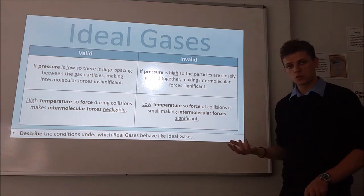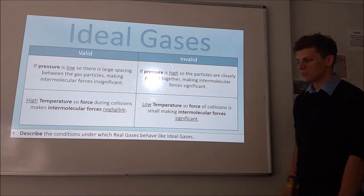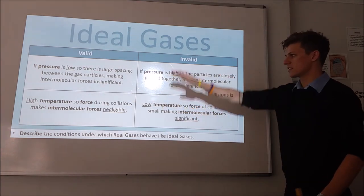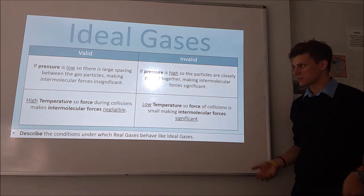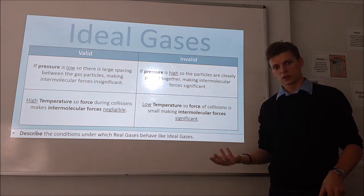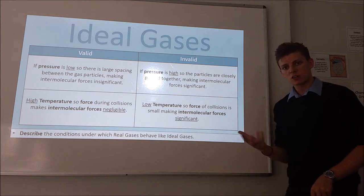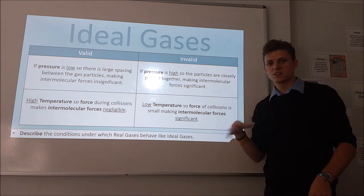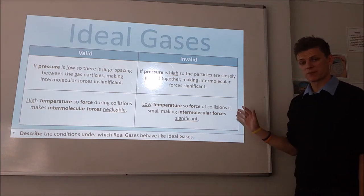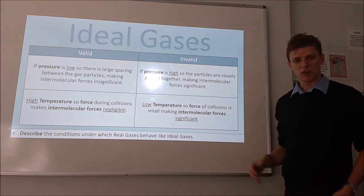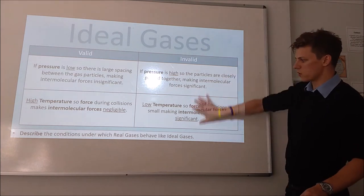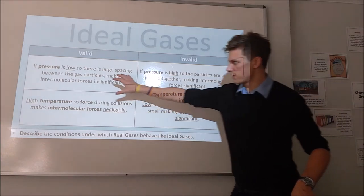To ensure a real gas can be modelled as an ideal gas, we need certain conditions. If it's going to be a valid assumption, we need the pressure to be sufficiently low, because that allows the particles to be spread out so intermolecular forces don't play much a part. And we need it to be at very high temperature so the particles are travelling very quickly, meaning during collisions the intermolecular forces don't have time to act and are small compared to the forces of the collisions. The ideal gas model will not work if we have high pressure, with particles packed close together, or if particles are travelling very slowly so intermolecular forces become significant.